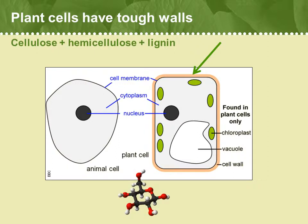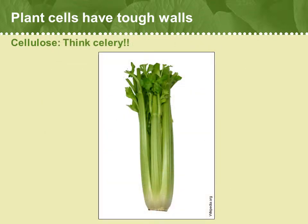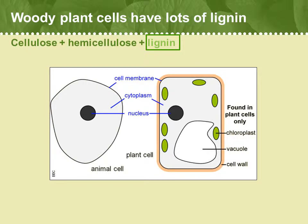Remember all those sugars, like the glucose molecules shown here, that are produced by plant photosynthesis? String all those glucose molecules together into a chain, or a polymer, and you get cellulose. Think celery — those strings of tough tissue that sometimes get stuck in your teeth — and you'll get a good sense of the flexibility and toughness of cellulose. The tissues of woody plants are more rigid than other plants because their cell walls consist of higher amounts of lignin, which is essentially the glue that binds all the cellulose together.